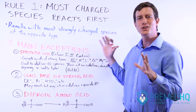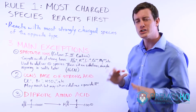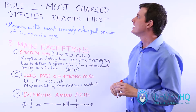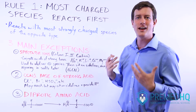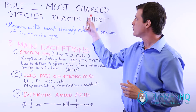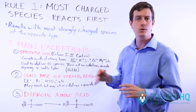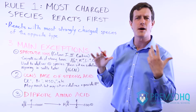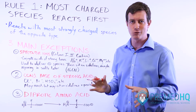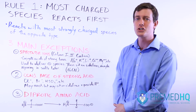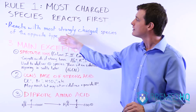We get to perhaps the cardinal guideline in all of organic chemistry, which I call a rule: when looking at an organic chemistry problem, the best way to approach it is to look at the most charged species and realize that it will react first. This is almost always true. The most charged species reacts first, and it reacts with the most strongly charged species of the opposite type. If you have something with a formal negative charge, it will find some positive or partial positive charge in its environment and attack that directly.